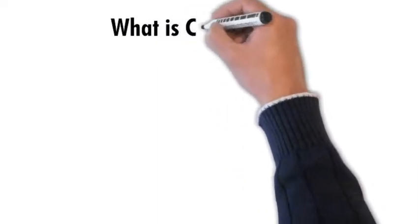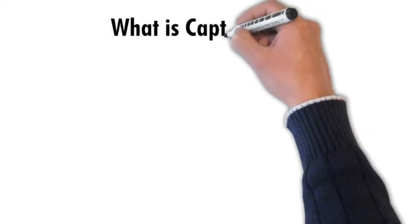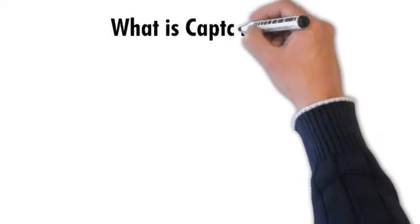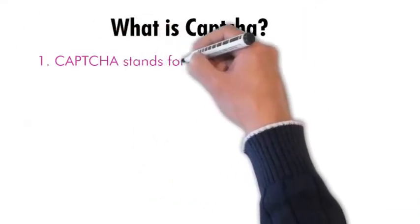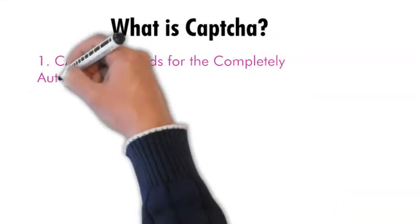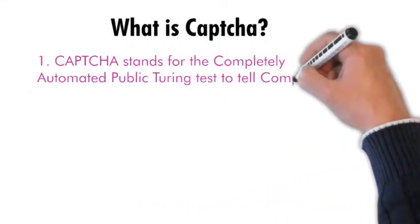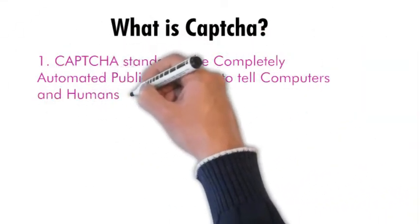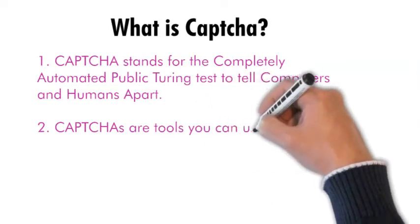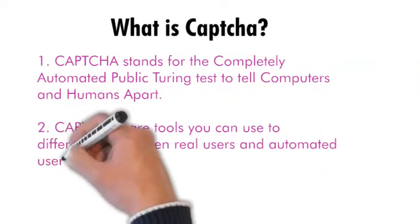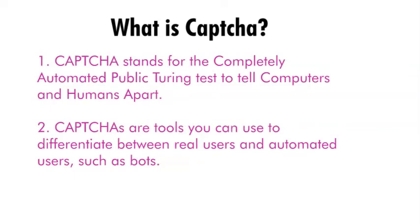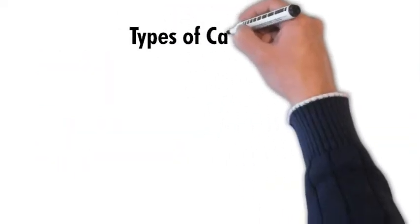CAPTCHA is one technique from which people can understand what are humans and what are computers handling the software. These are basically tools which can be used to differentiate between the real users and the bots. So for security purposes, CAPTCHA is used for so many softwares nowadays.